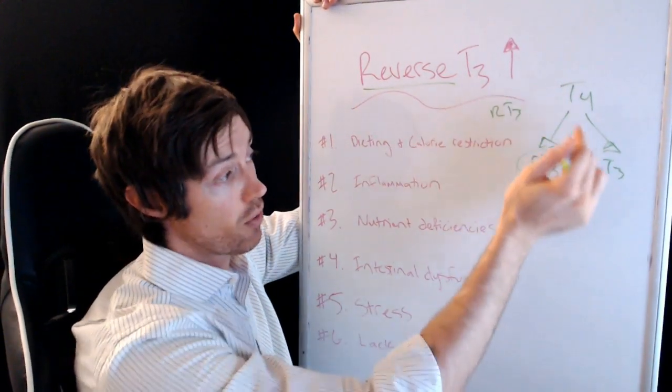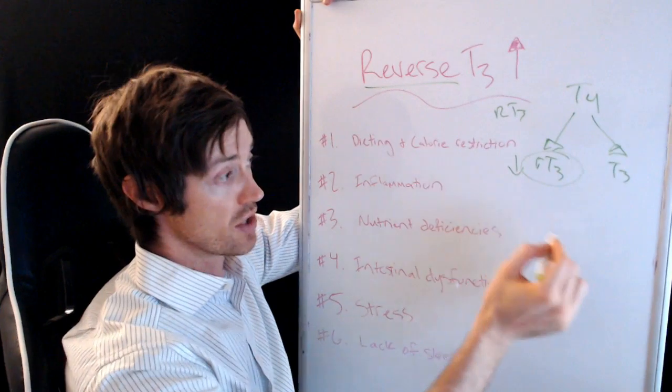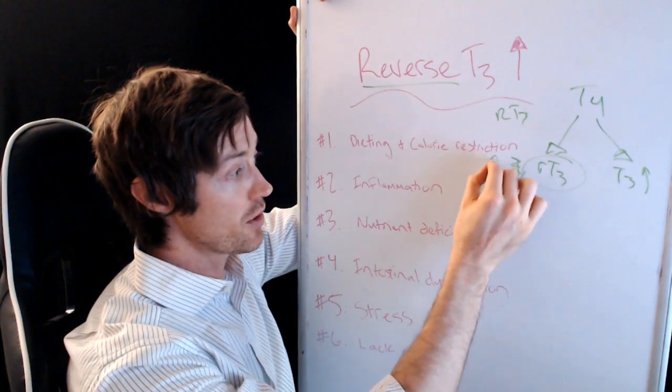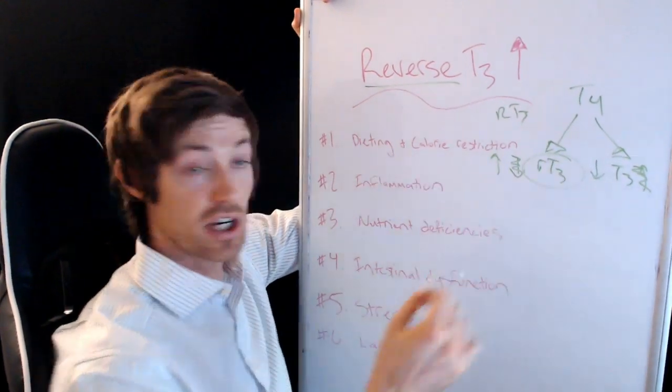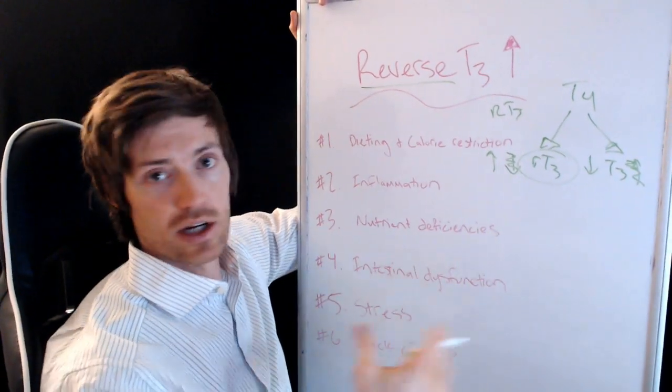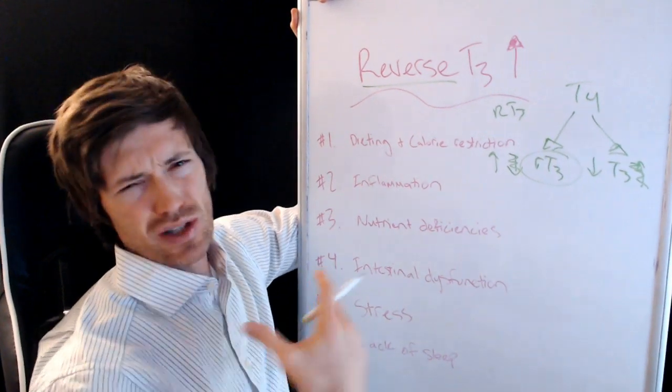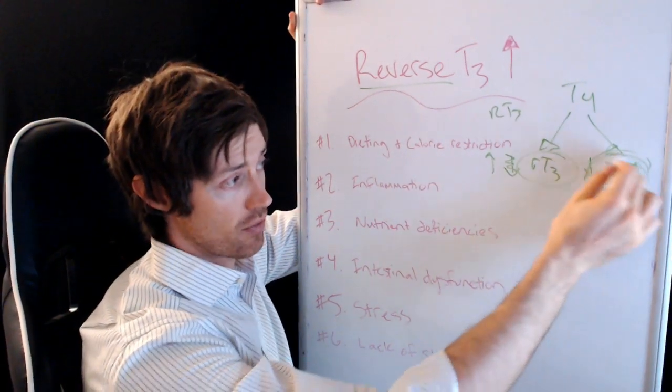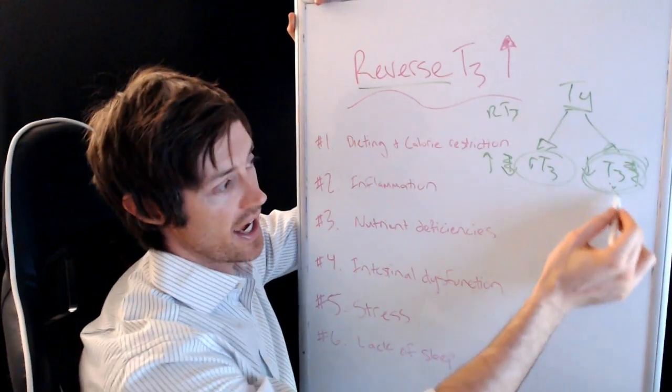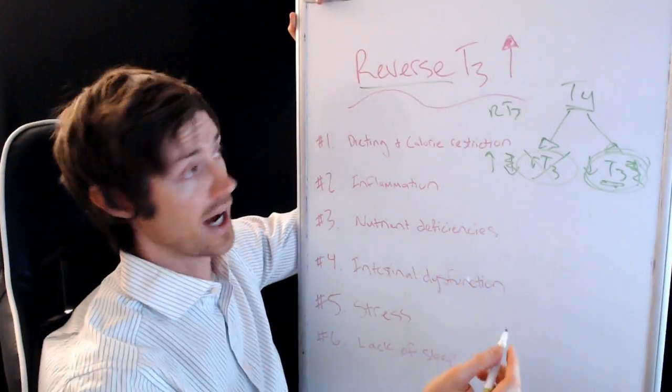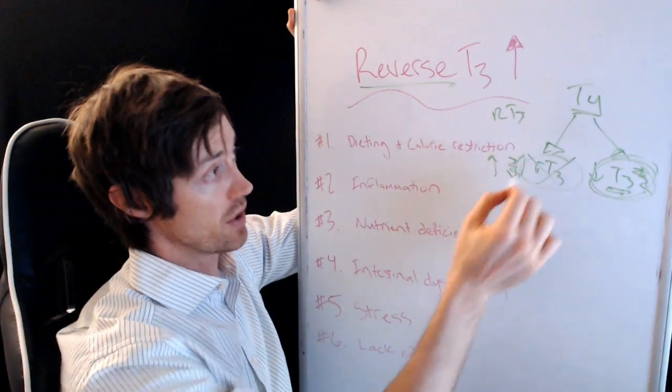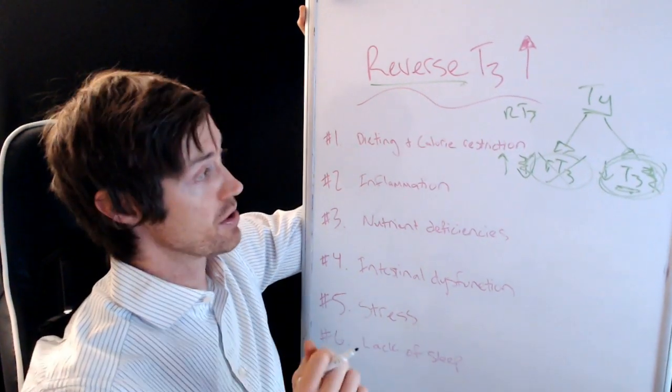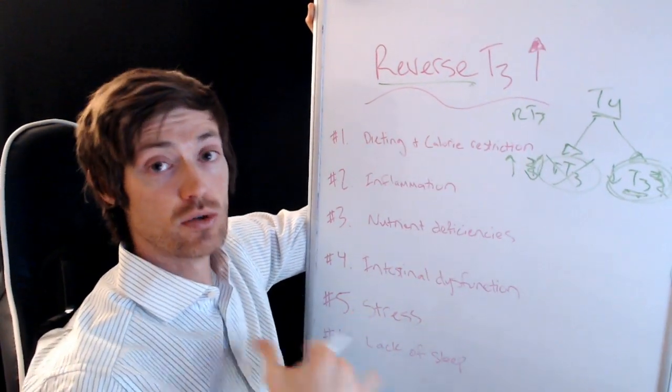And when your body converts T4 into T3, it reduces your reverse T3 level and increases your T3 level. But conversely, there are many factors which can increase your reverse T3, which decreases your T3. And that is what's going to make you feel crappy, make you feel hypothyroid, experience weight gain, hair loss, constipation, fatigue, and so on. So you want your T3 levels to be normal to high and you do not want your reverse T3 levels to be high.